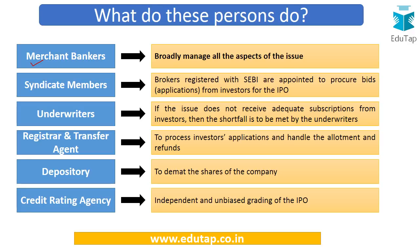Merchant bankers manage all broad aspects of the issue. Syndicate members are brokers registered with SEBI and appointed to procure bids and applications from investors for the IPO in the case of a book-building issue. Underwriters provide risk assurance: if the issue does not receive adequate subscription as per SEBI norms, the underwriters subscribe to the difference — essentially, if the public does not buy your shares, they will buy the remainder.